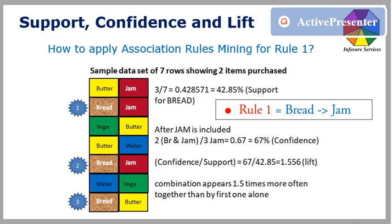Let's see how to apply association rules mining for rule 1. Here we have a sample dataset of 7 rows having 2 items. In the sample dataset, we have 2 columns. There are several items like bread, jam, butter, vegetable, water, etc. As you can see, the bread is shown in brown and the jam in red.